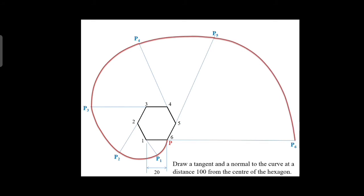In this problem, we are going to discuss how to draw a normal and tangent to the curve at a distance 100 mm from the center of the hexagon. First, locate the center of the hexagon: with 1 as center and radius 1 to 6, draw an arc; then with 6 as center and radius 6 to 1, intersect the arc — that intersection is the center of the hexagon. With O as center and 100 mm as radius, draw an arc on the involute curve — the intersecting point is M. Join O and M and extend the line — this is the normal line. Then draw a tangent line through M perpendicular to the normal — the line name is TT dash.